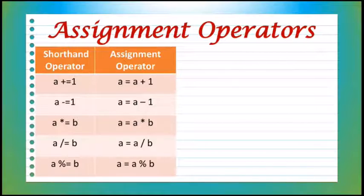Next is A -= 1, which is similar to A = A - 1. Both statements work the same way. In both cases, 1 is subtracted from A and the result is stored in A.